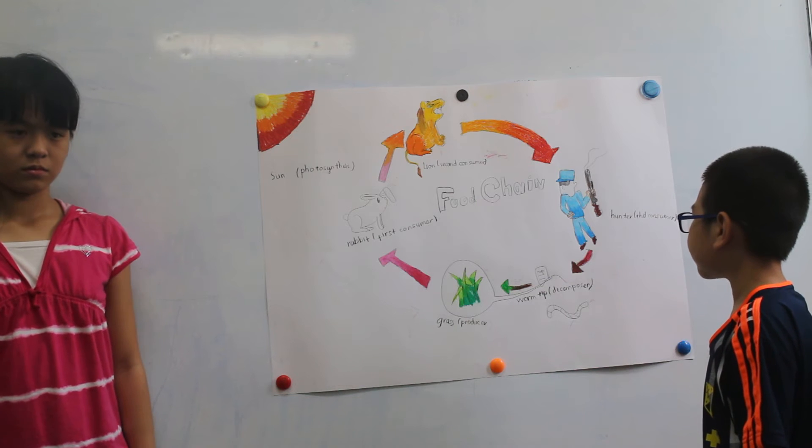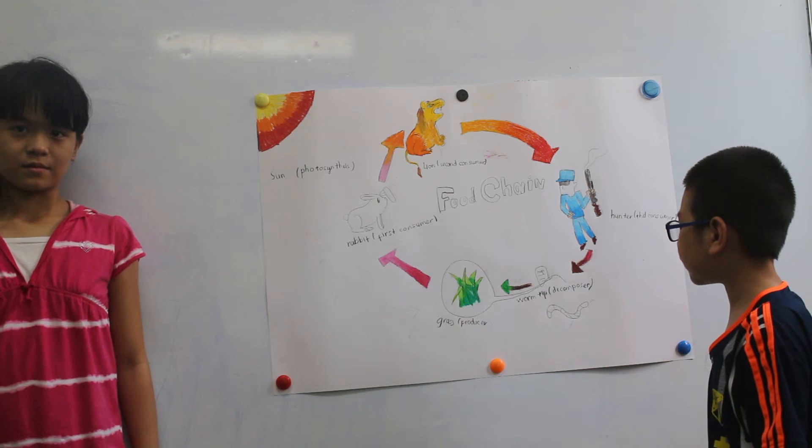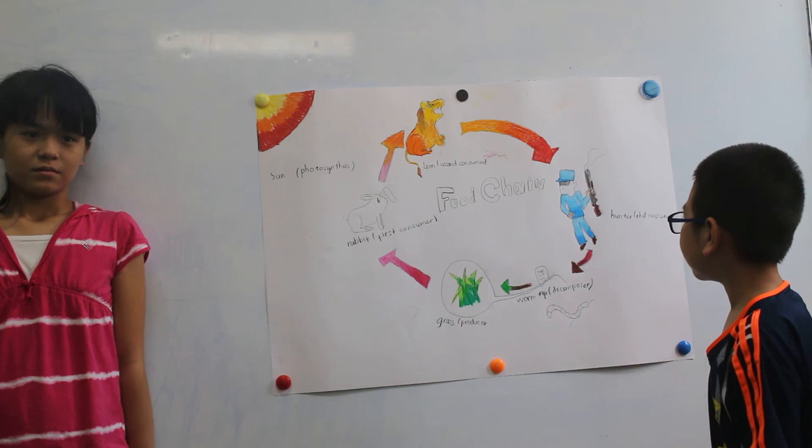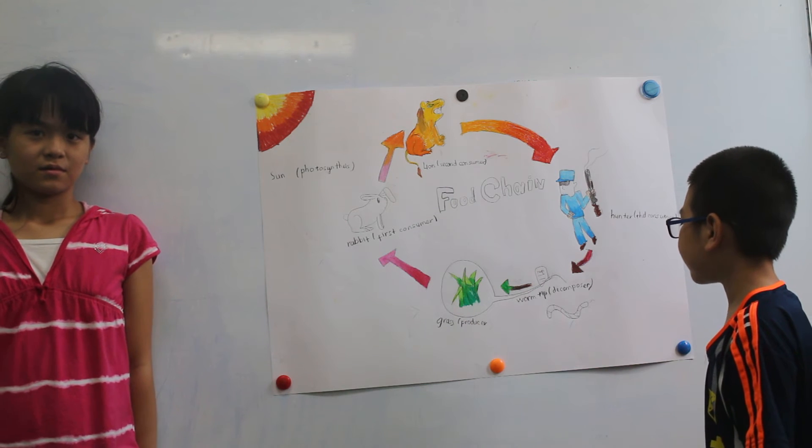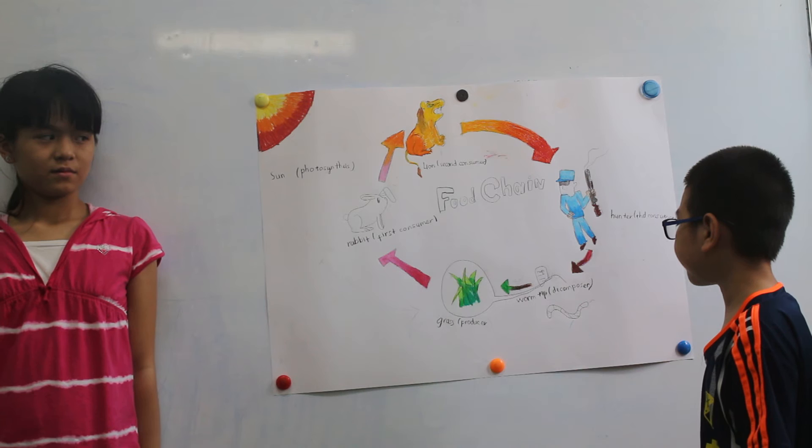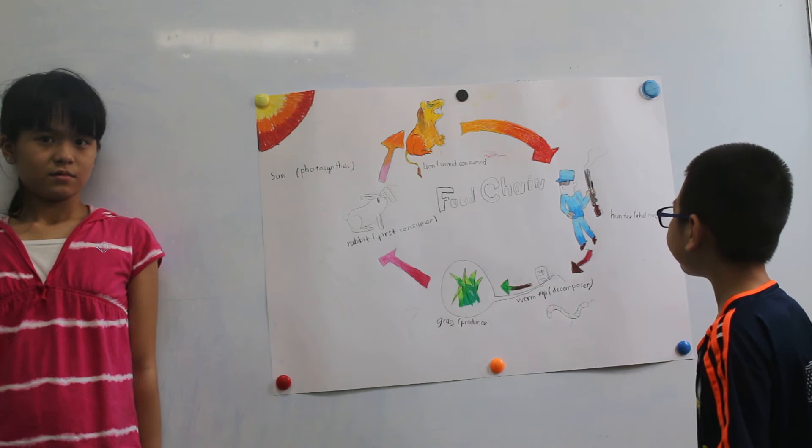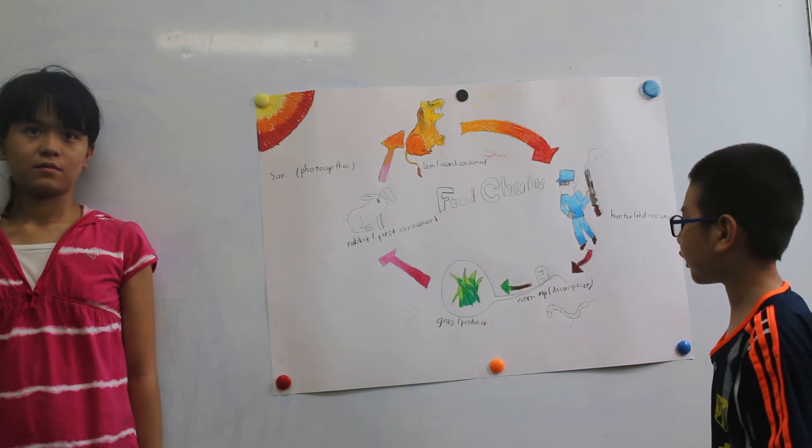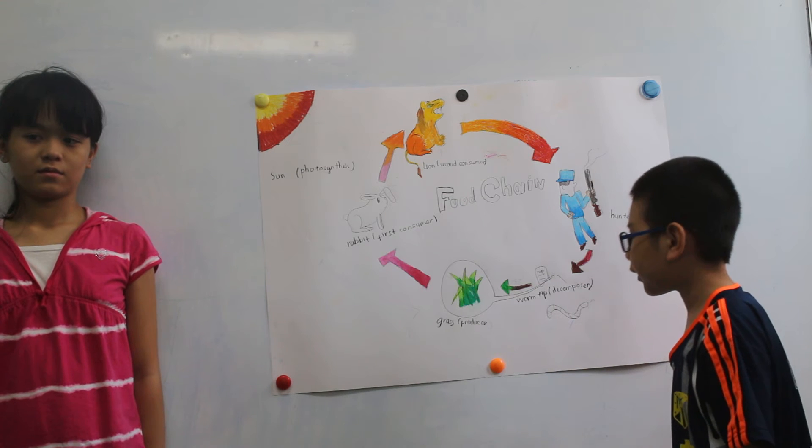When the hunter dies, he falls down to the earth. The worm is a decomposer. The worm breaks down the hunter for the soil, for grass, completing the cycle.